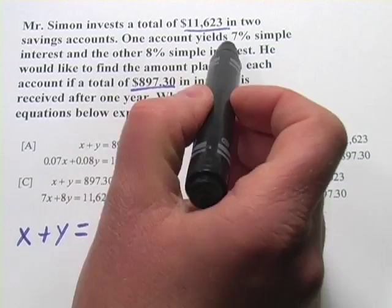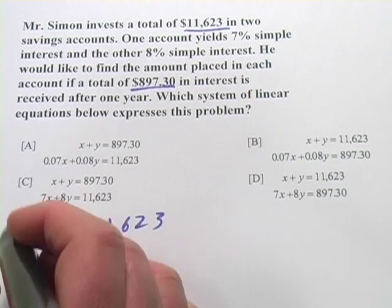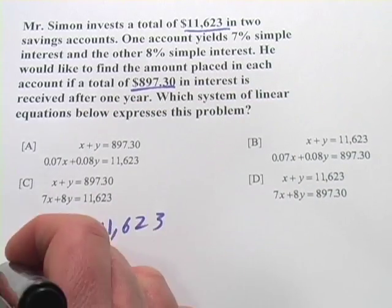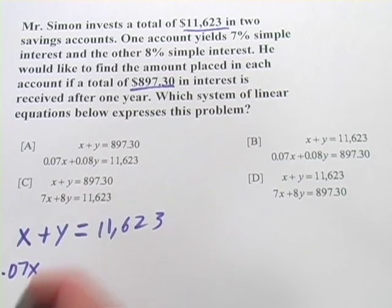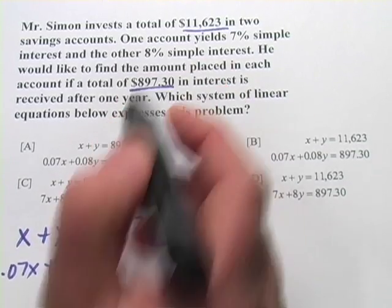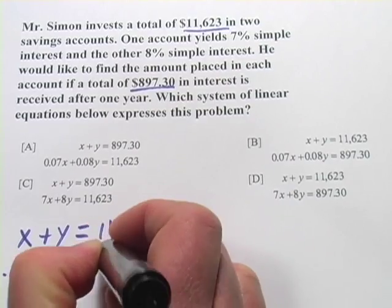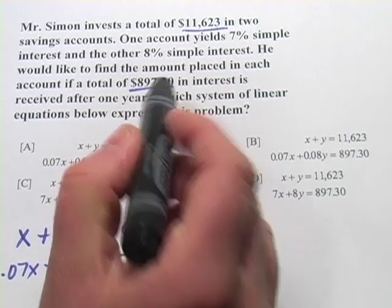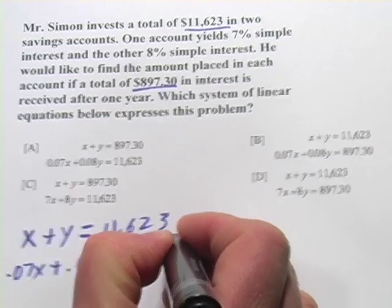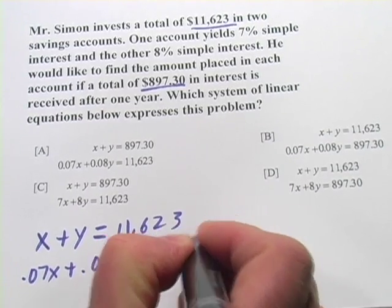The other equation you're going to write has to do with the interest. So the interest on the first account is 7%, so 0.07 times x, plus the interest on the second account, which would be 0.08 times y, is going to add up to his interest income, so $897.30.